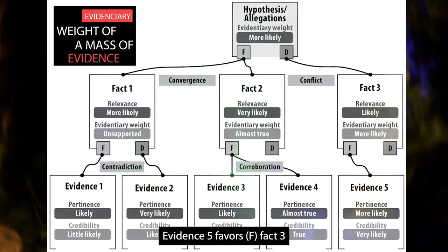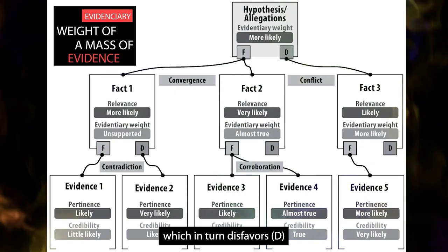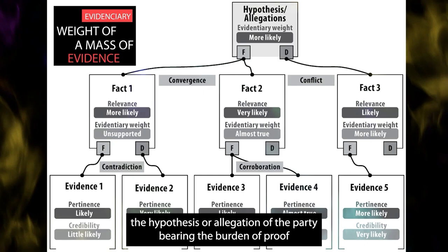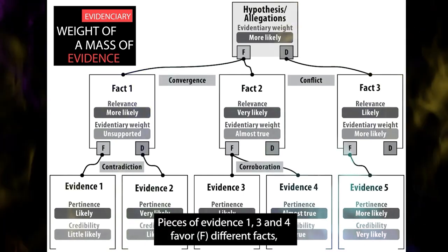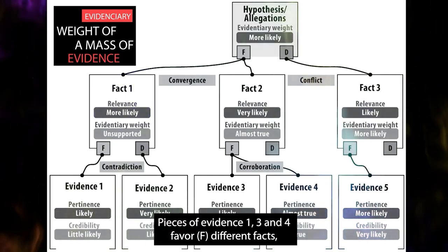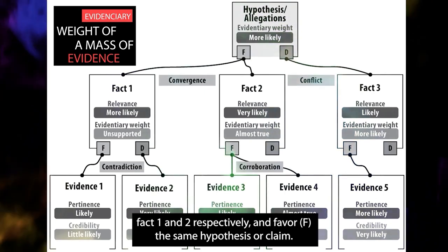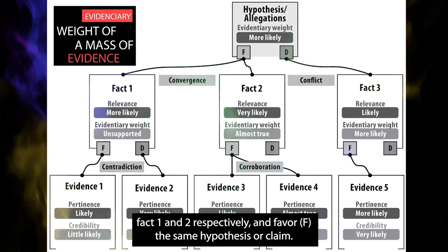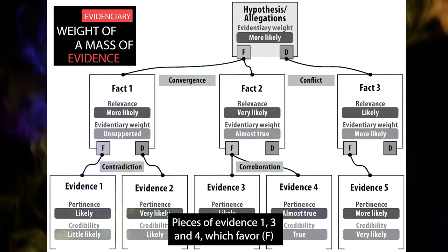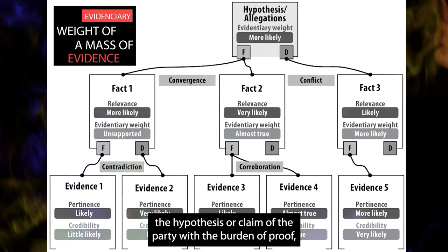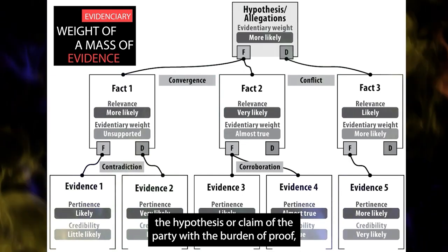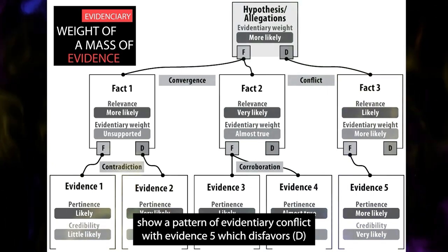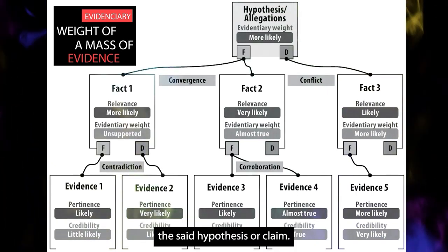Evidence 5 favors Fact 3, which in turn disfavors the hypothesis or allegation of the party bearing the burden of proof. Pieces of evidence 1, 3 and 4 favor different facts — Fact 1 and 2 respectively — and favor the same hypothesis or claim. These pieces of evidence show a pattern of evidentiary conflict with evidence 5, which disfavors the said hypothesis or claim.